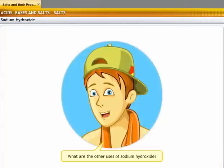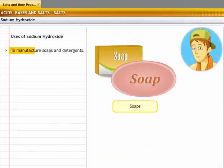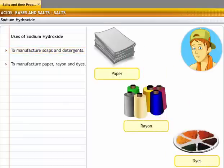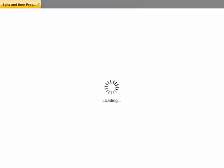What are the other uses of sodium hydroxide? It is used to manufacture soaps and detergents. Sodium hydroxide is also used to manufacture paper, artificial fibers like rayon and dyes.